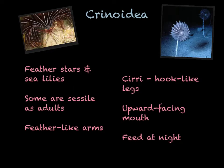Crinoids include feather stars and sea lilies. Some of them are sessile as adults. They do have tube feet, but their tube feet tend to be on the ends of the arms, and they tend to have pentamic symmetry in multiples of five. Their mouths face upward, unlike most other echinoderms.